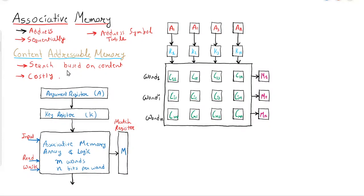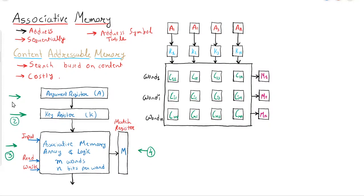Now let us discuss how content addressable memory works. As you can see in the figure, content addressable memory has various components. The first component is the argument register, the second is the key register, the third is the associative memory itself, and the fourth is the match register. So there are four components total.